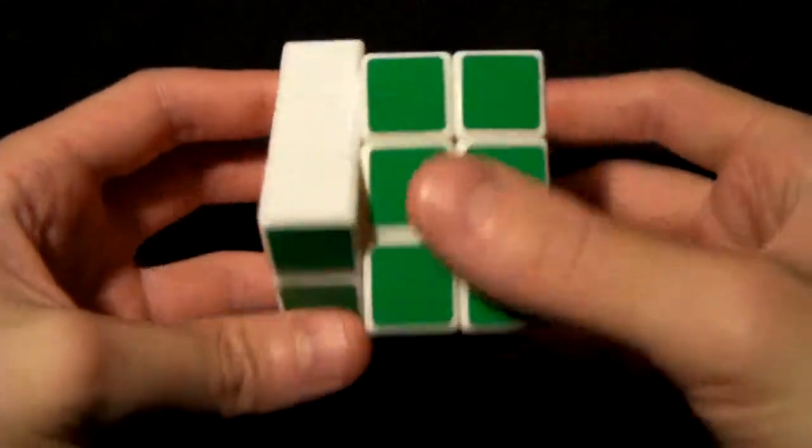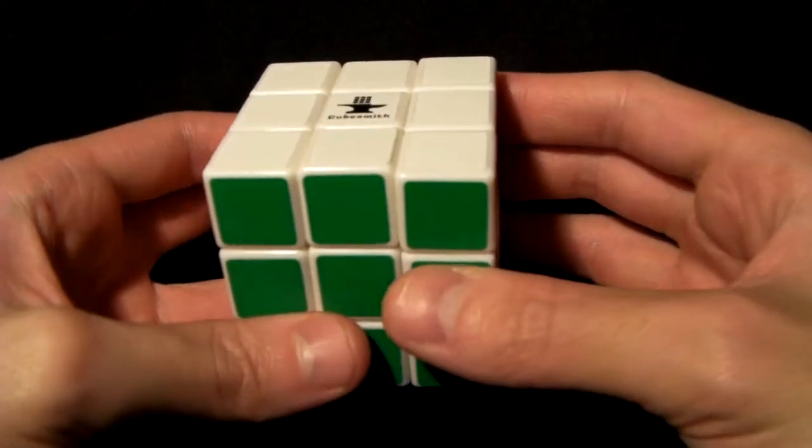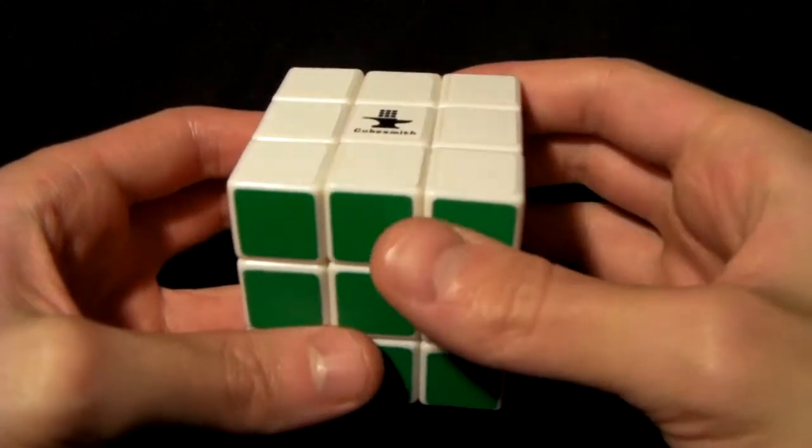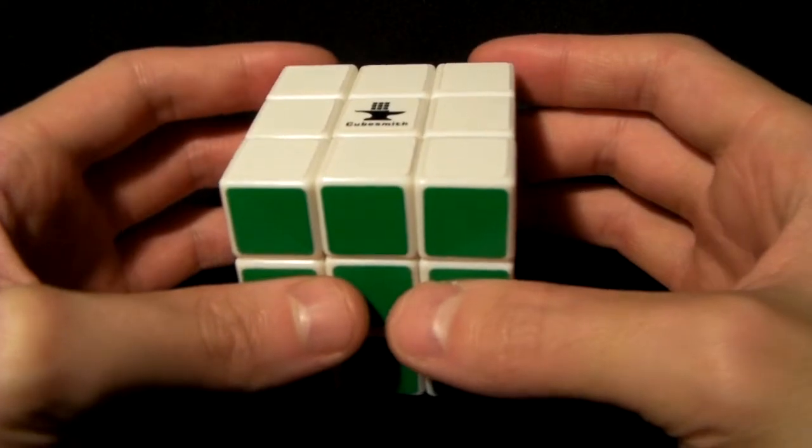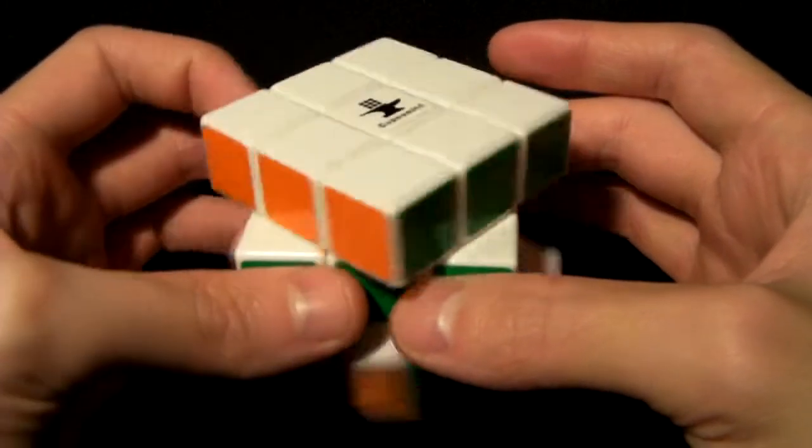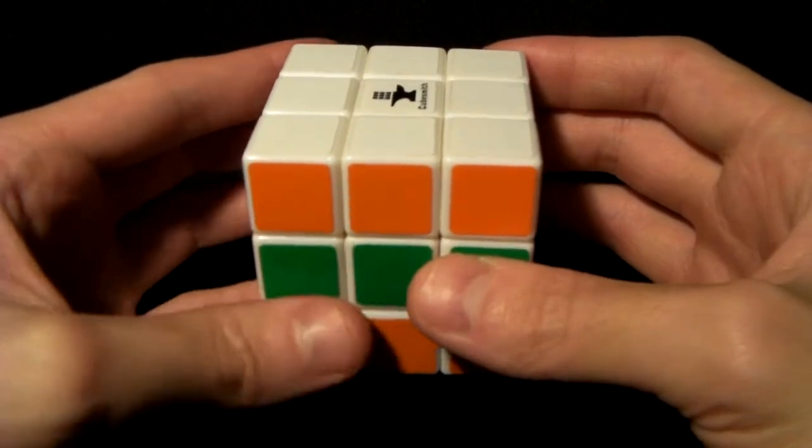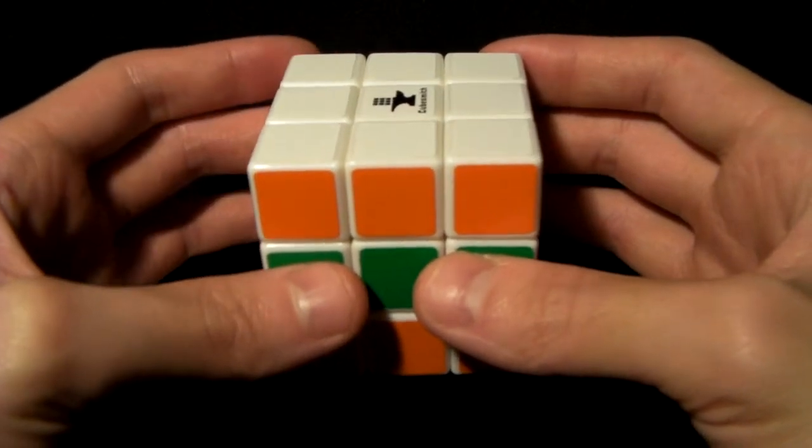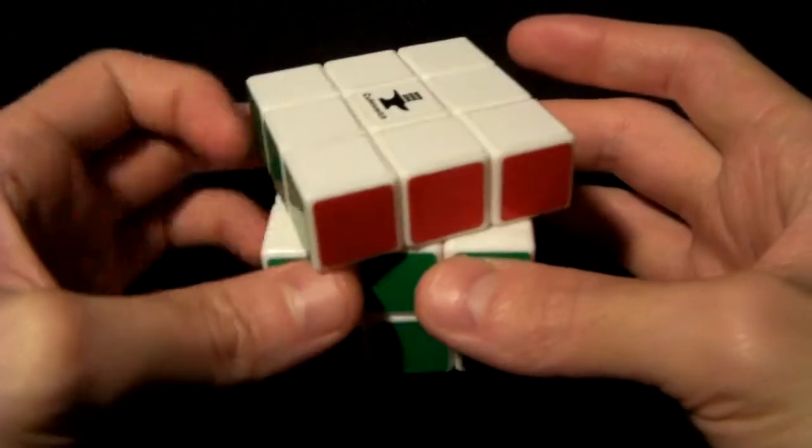There's also double layer variations of these, and the difference is the middle layer stays static - that is, the middle layer doesn't move. For example, we have lowercase e, which is as follows, and that's indicated by the lowercase e just like all other double layers. So lowercase e prime sets it back, and lowercase e2. I'm not going to do the other layers because double layer inner layer turns - I've never seen them, so there's not much point in going into them.